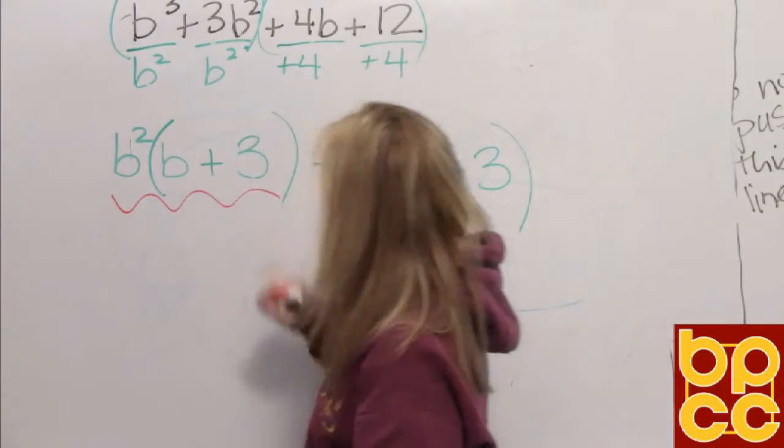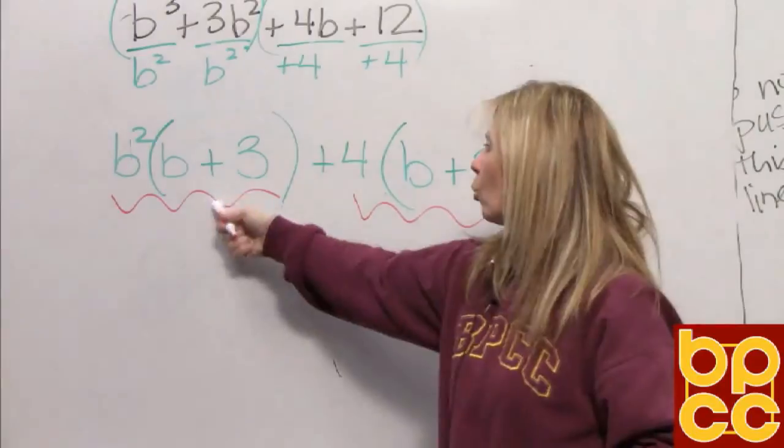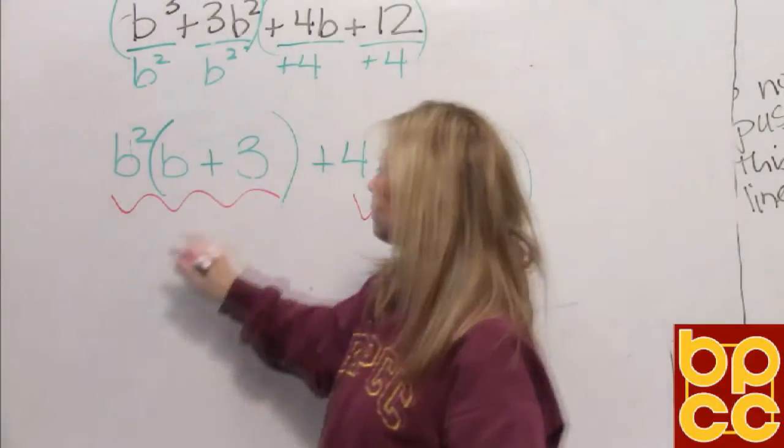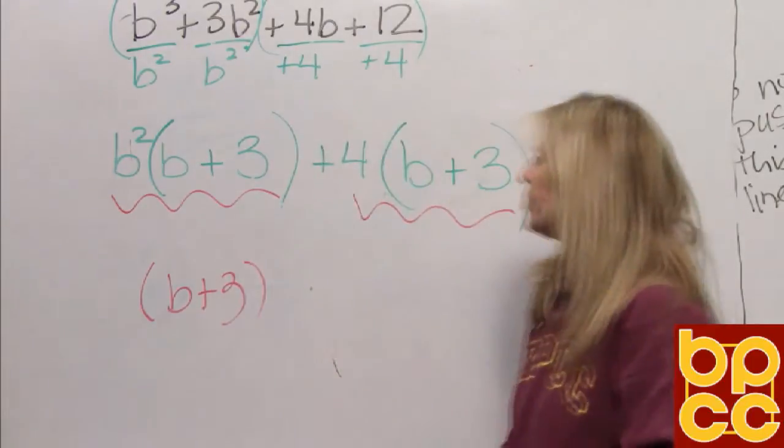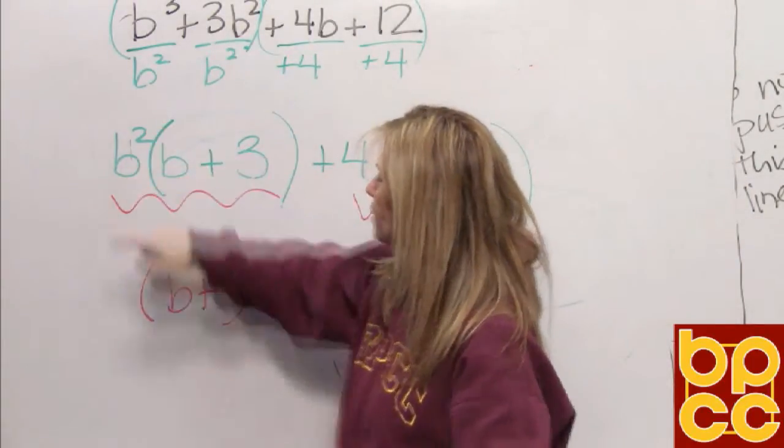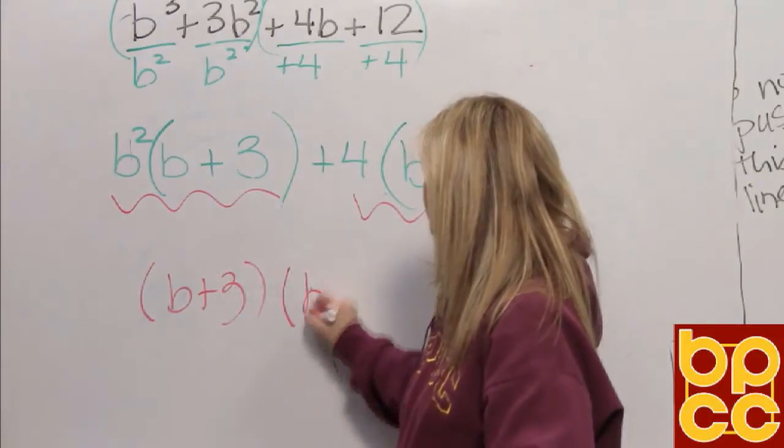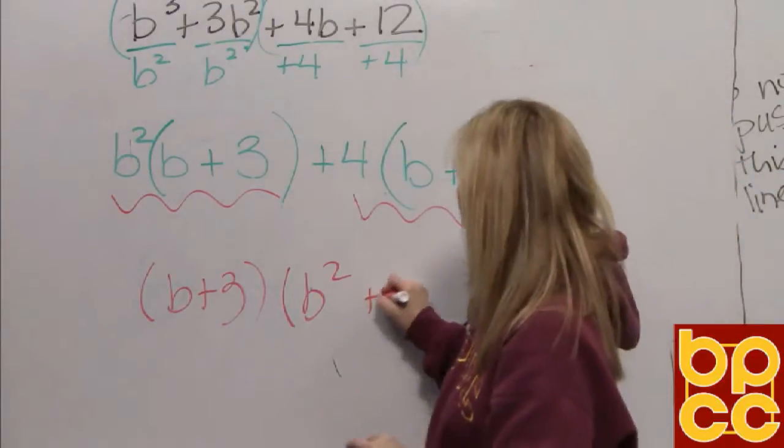If you look, all of this and all of this have something in common. What do they have the same? The B plus 3. So we'll write that in front. Then if you divide by B plus 3, what would be left is the B squared. And if you divide this side by B plus 3, you'd be left with a positive 4.